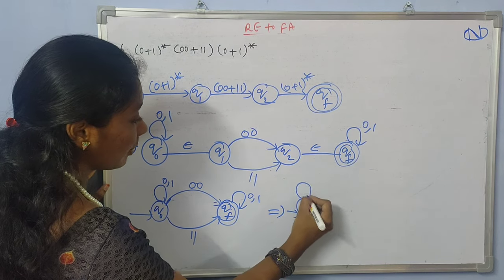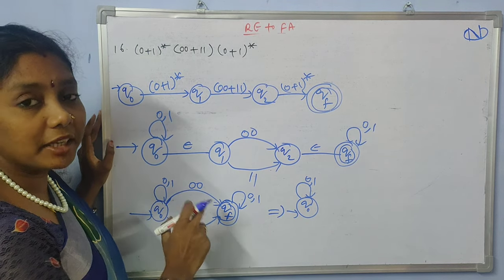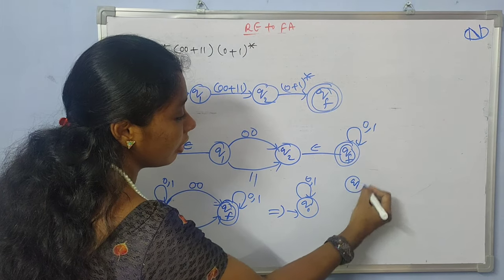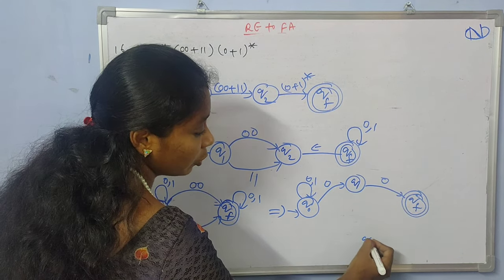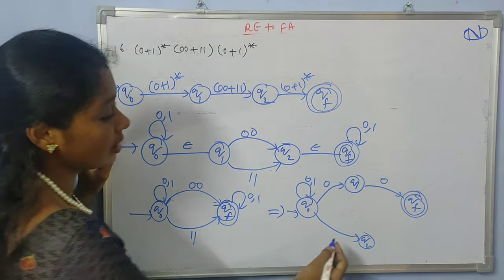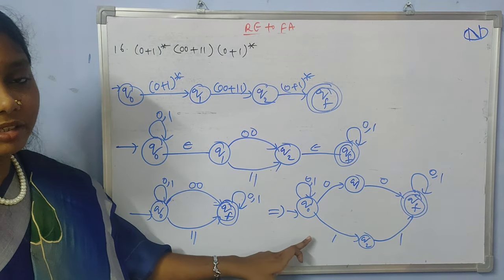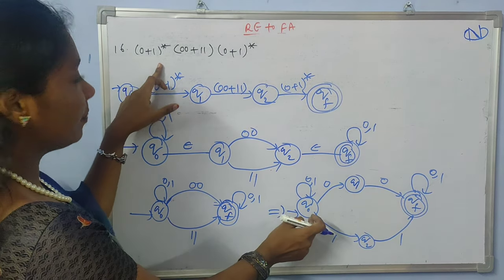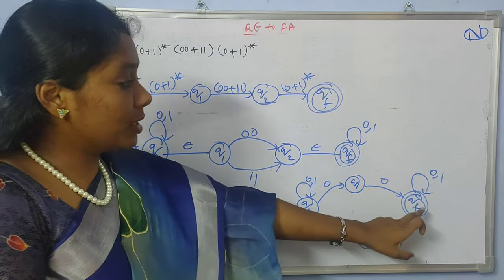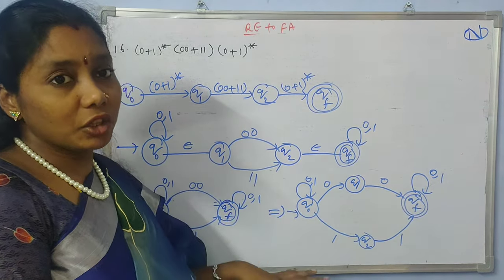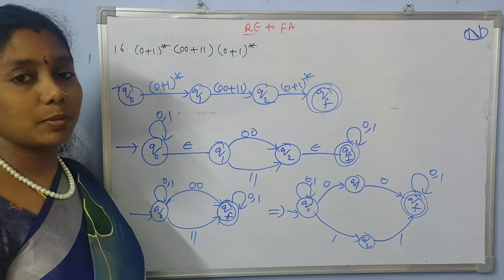So here I have initial state q0 with self loop 0,1, and I can reach the final state either with 00 or with 11. To handle 00 I take an intermediate state q1 with input 0, then 0 again to qf. Similarly for 11 I introduce state q2 with input 1, then 1 again to qf. I also have a self loop of 0,1 on the final state. This is the required finite automata for (0+1)*(00+11)(0+1)*. In this way we can obtain finite automata from any given regular expression.